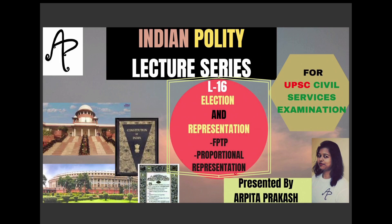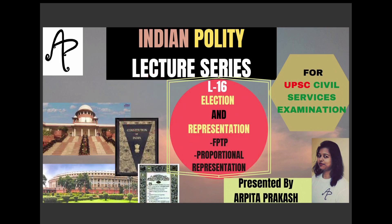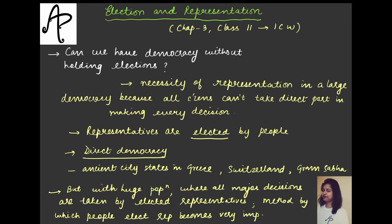We will talk about the First Past the Post system, called FPTP, and proportional representation. These topics are not clearly explained in Lakshmikanth — only the terms are mentioned. This material is borrowed from Class 11 NCERT, 'Indian Constitution at Work', Chapter 3. The entire chapter is being summarized here because this information is likely to come in prelims questions.